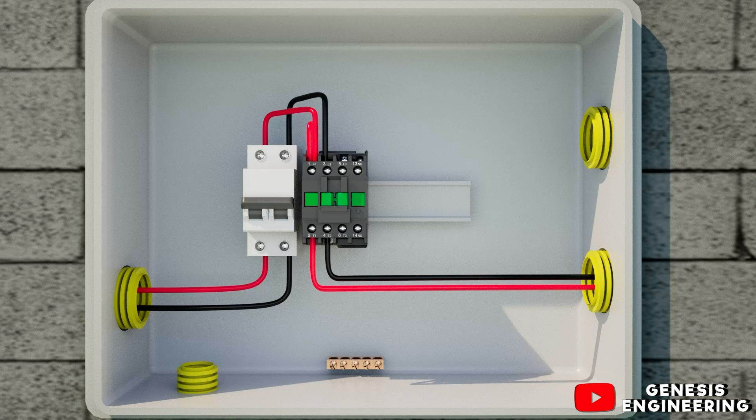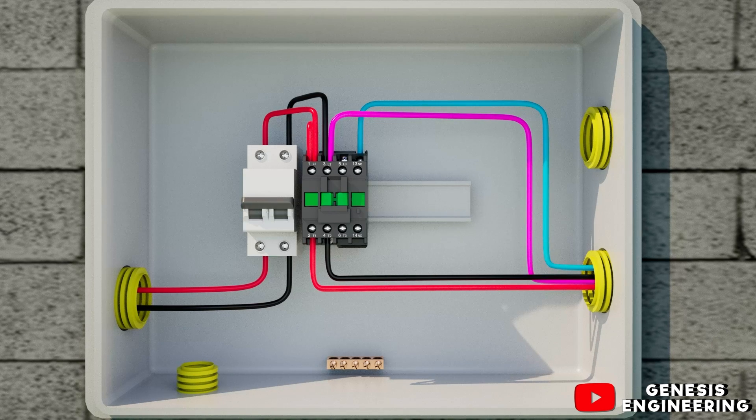On the contactor terminal 3 and on the contactor A2, we leave with a conductor and connect it to the float switch. This way when the float switch closes the contacts it will feed the contactor coil and turn on the pump.